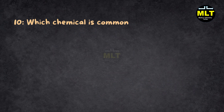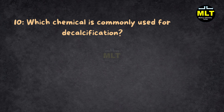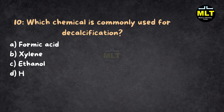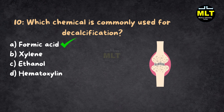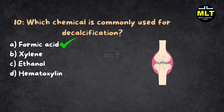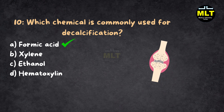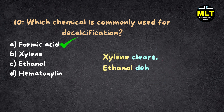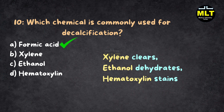Question 10: Which chemical is commonly used for decalcification? Options: A. Formic acid, B. Xylene, C. Ethanol, D. Hematoxylin. Correct Answer: A. Formic acid. Explanation: Formic acid is the decalcification pro, gently dissolving calcium while preserving tissue details. Xylene clears, ethanol dehydrates, and hematoxylin stains. But when it comes to bones, formic acid rules.